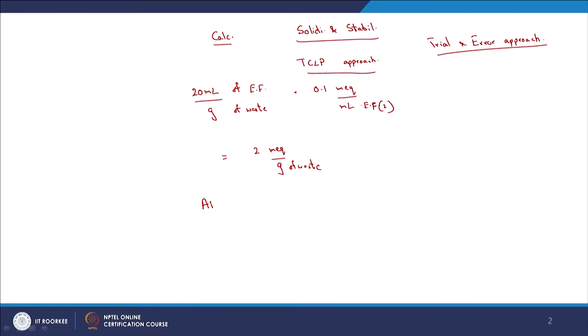You need to be able to neutralize this acid. The acid neutralizing capacity (ANC) of the waste or the total mixture should be equal to 2 milliequivalents per gram. This depends upon the different fractions present and their individual acid neutralizing capacities.